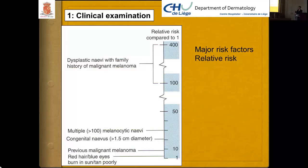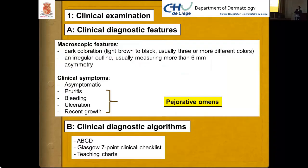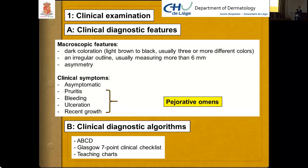Clinically, we look for dark coloration — blind brown to black — usually with two or more different colors, an irregular outline, diameter usually more than 6 mm, and asymmetry. Ninety percent of lesions are completely asymptomatic; however, when pruritus, bleeding, ulceration, or recent growth are mentioned by the patient, these are pejorative signs indicating the lesion is probably in a more advanced stage.